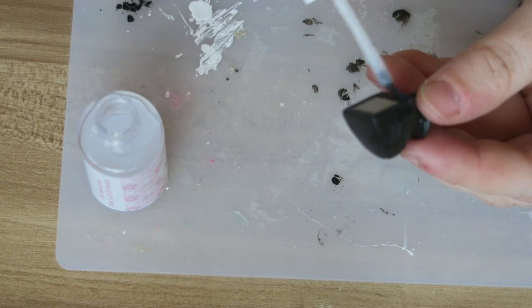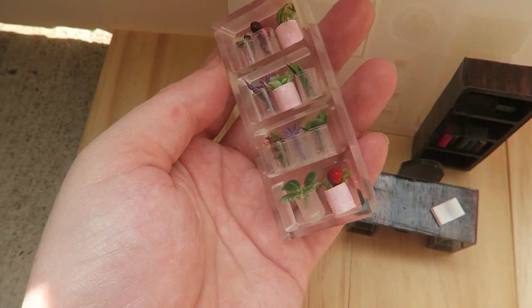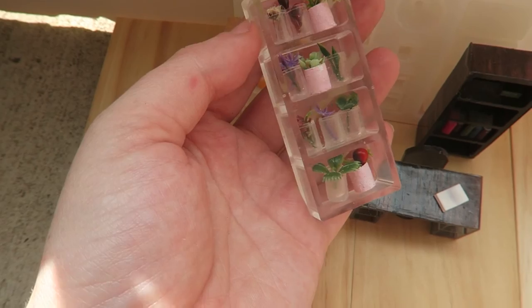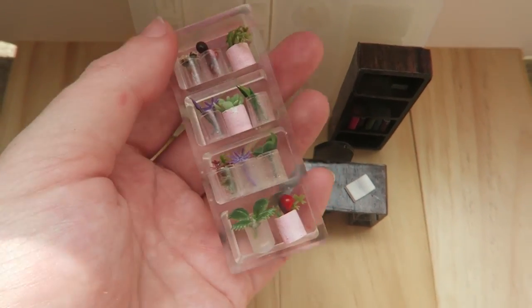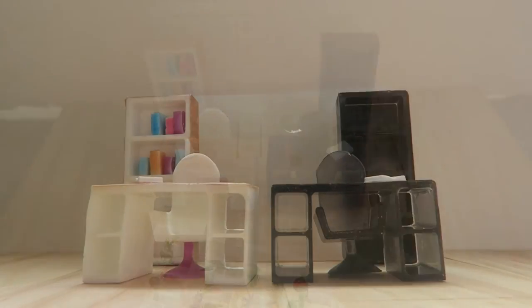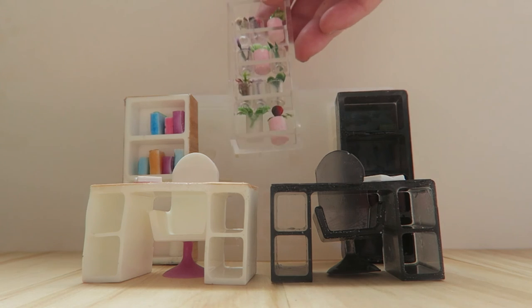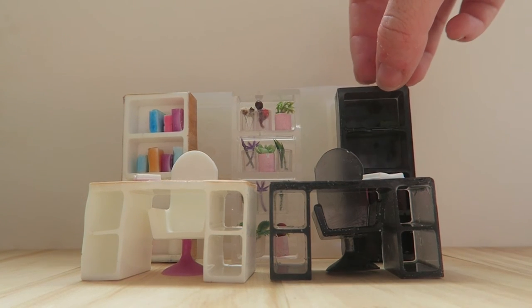Alright, so that's it in terms of the tutorial portion. So as promised, let me show you how everything looks all together. So first up, we have this garden style shelf and I filled the jars with some miniature plants from the March kit actually. I made the bookshelf completely clear from clear resin as you can tell. And then here it is behind a couple desk setups. Oops, I knocked over a bookshelf. Luckily it doesn't have anything in it.